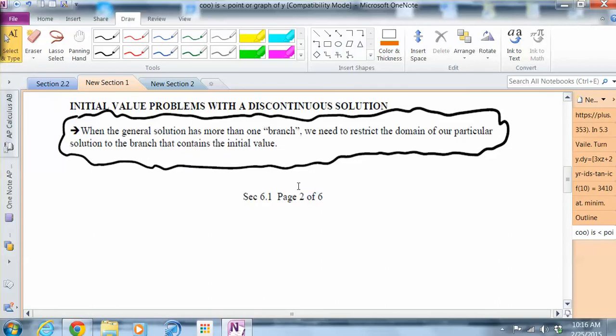What about initial value problems with a discontinuous solution? So what happens is that when the general solution has more than one branch, like for example, we have a rational function like y equals one over x. So you have two different branches and of course we have an asymptote at x equals zero. Or if we have tangent of x which looks like this, we could have some sort of situations there with that.